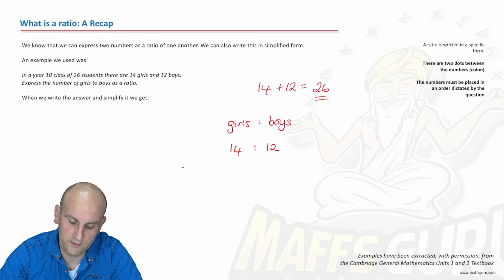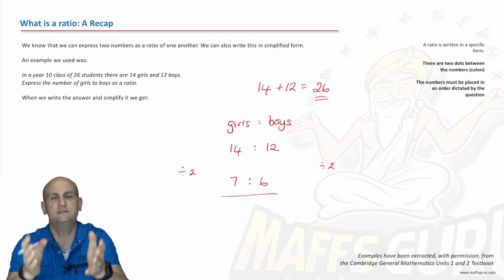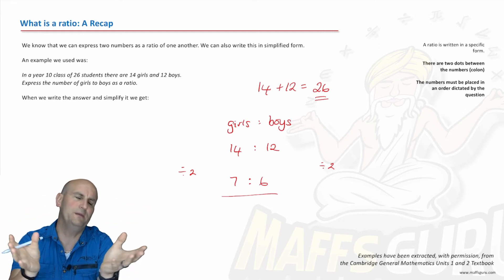Lovely. So if I now divide both sides by 2, and we have to do both sides by the same number to keep it equivalent, then we find we have a ratio of 7 to 6. Hooray! Life goes on. The examiner's happy. I'm happy. Everybody happy, happy, happy.